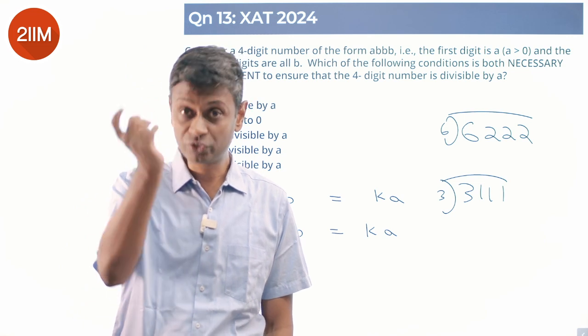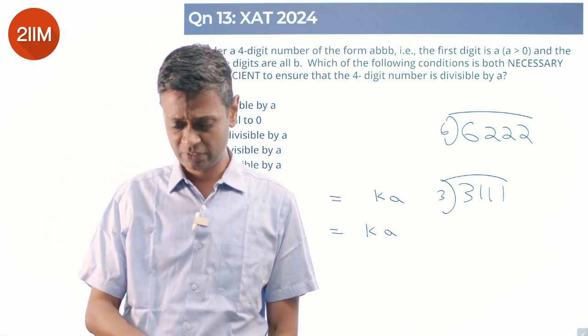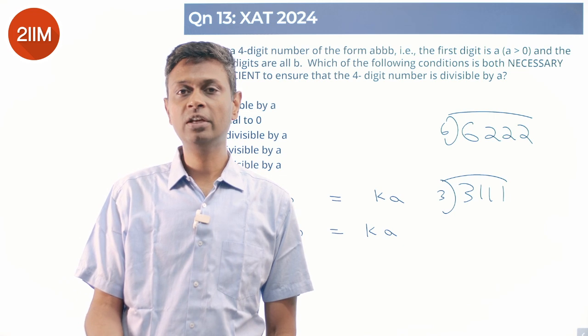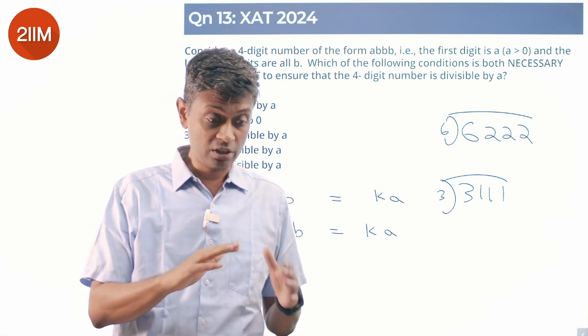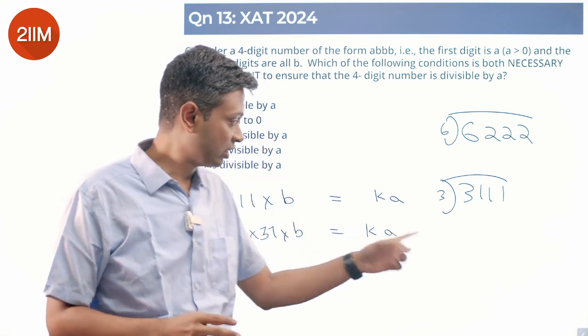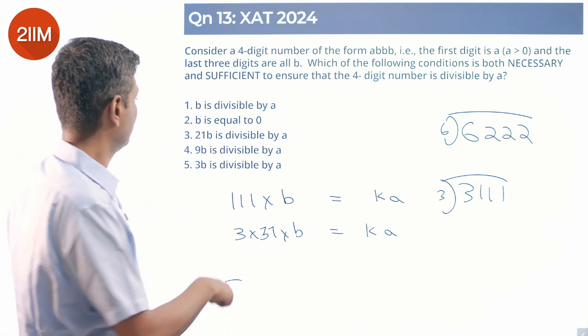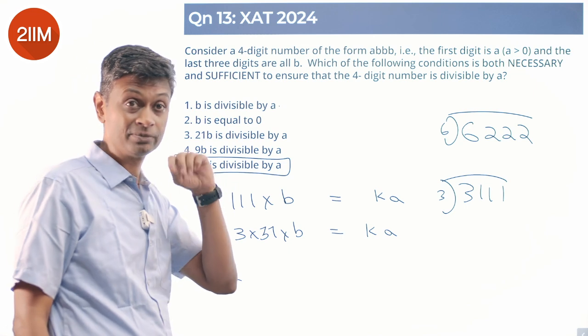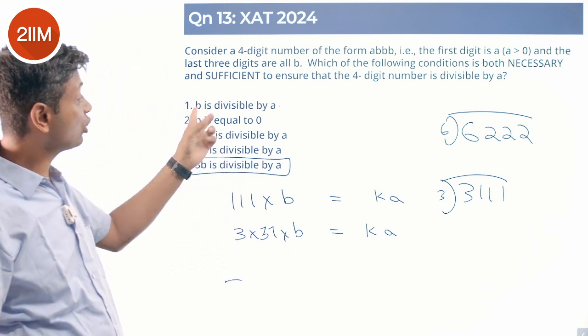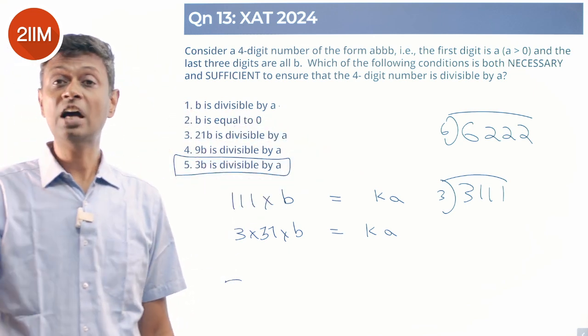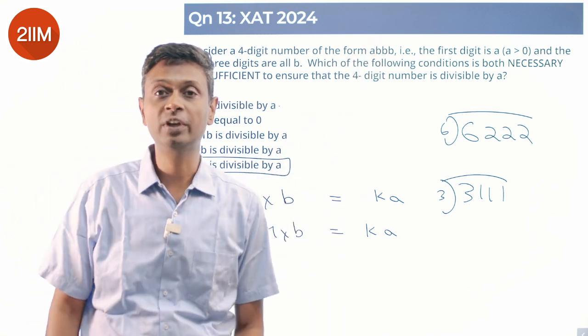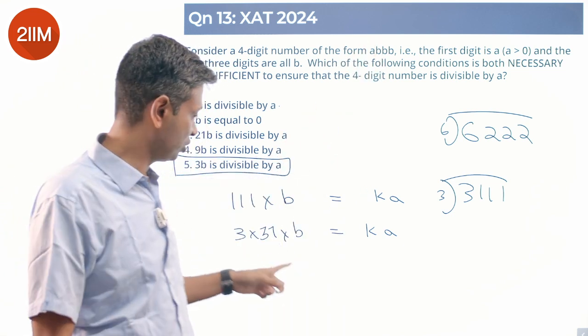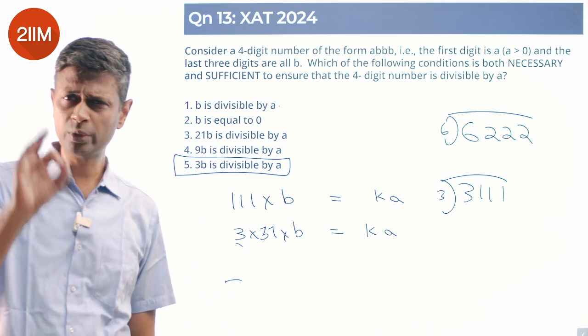But if A is a factor of 3B, that is sufficient. If A is a factor of 3B, this will work. It is necessary and sufficient if A is a factor of 3B. Both ways it works. So 3B is divisible by A. I could have a scenario where B is not divisible by A and still A triple B is a multiple of A. That is still possible because of this pesky 3 sitting here. Beautiful question.